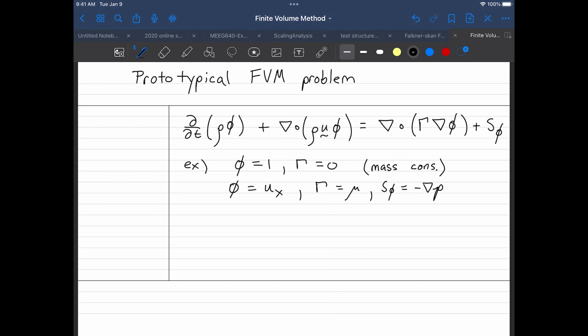So the source term in conservation of momentum represents forces that are being applied to the system. So for example, if I add a pressure gradient and maybe a gravitational pull, that would represent conservation of momentum.